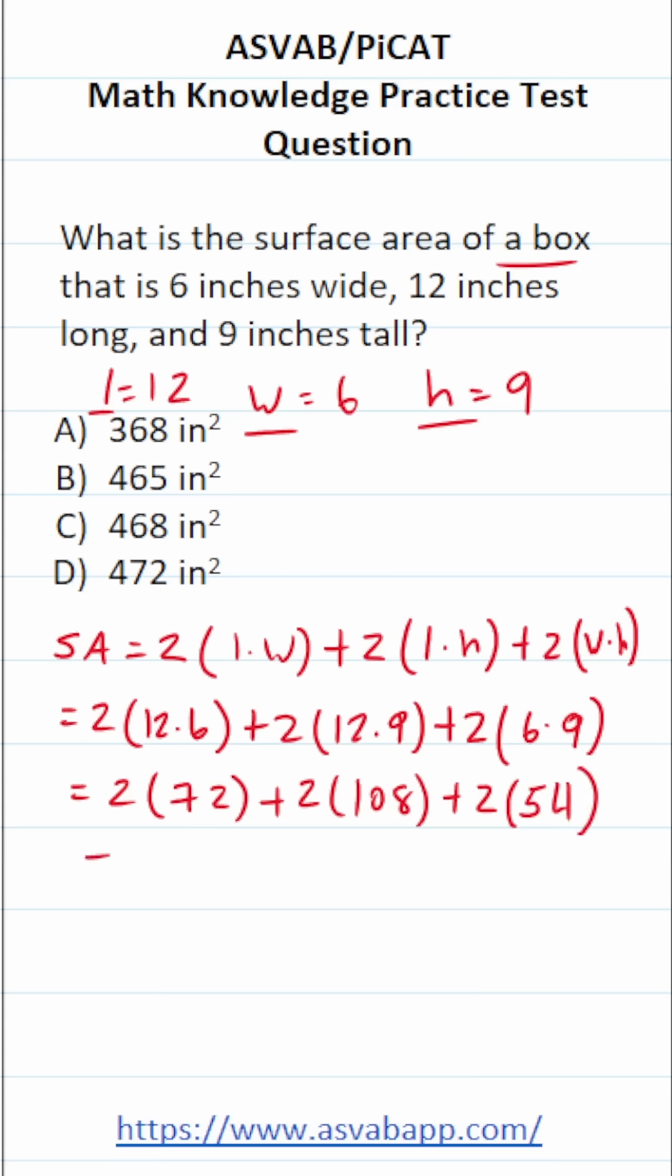All right, now for this part, if you want to work it off to the side, you can. You should be able to do this part mentally too. But if you need to work it off to the side, you can. Again, 72 times 2. That's 144. So this is 144 plus 2 times 108. You should be able to do mentally.